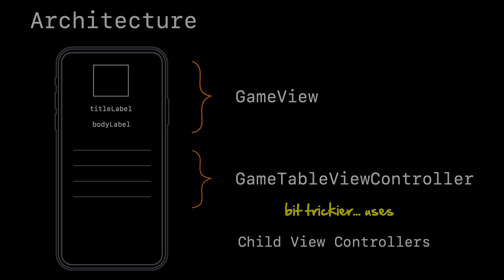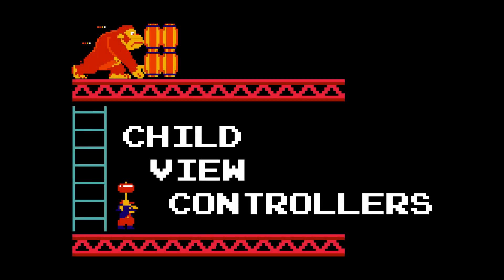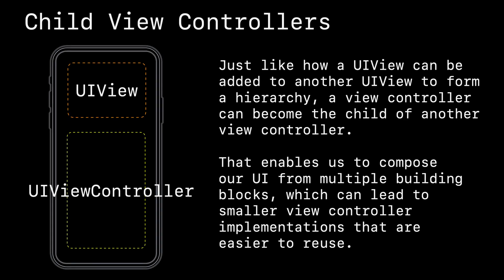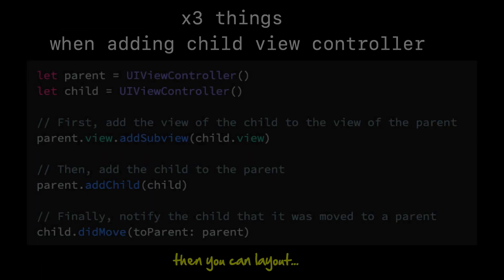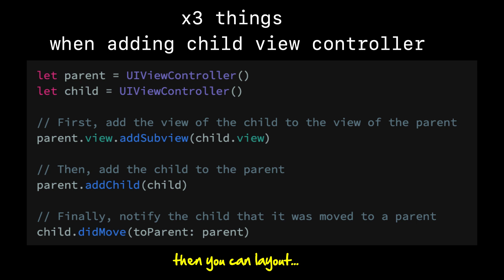Just like we can have views embedded within view controllers, we can also have view controllers embedded within view controllers — these are called child view controllers. When we add them to a parent view controller they behave like a view, but there are some mechanical differences. By default, a child view controller will want to stretch and fill up the entire parent's view, but we can control its size and spacing using frames and auto layout. When adding a child view controller to a parent, there are three things we need to do: first, add the child's view to the parent view.